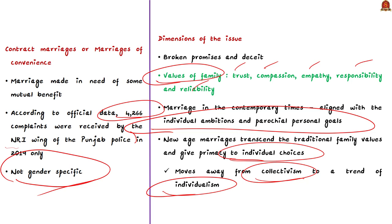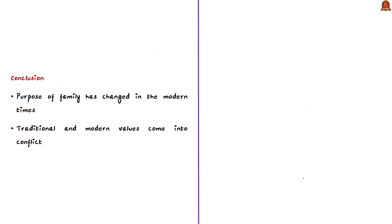You can say that contract marriages of Punjab are deteriorating family values and that traditional values of trust, compassion, empathy, responsibility, and reliability should be given priority. Such answers will be appreciated in ethics and will differentiate your answer. In conclusion: the purpose of family has changed in modern times; individual values and personal goals are taking precedence over family values; traditional and modern values are coming in conflict, and we need to find the right balance.